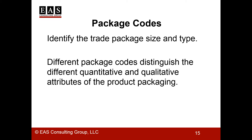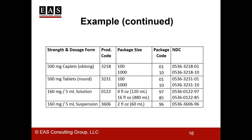Now the third segment of the NDC is the package code, which basically identifies the trade package size and type. Different package codes differentiate between the quantitative and qualitative attributes of the product packaging, like the number of pills in a bottle, the weight or volume, or the type of package such as a bottle, bag, or tube. The acetaminophen caplets and tablets came in two package sizes — 100 and 1,000 — and the package codes assigned were 01 and 10 respectively. The oral solution came in two sizes: a four fluid ounce and a 16 fluid ounce, with package codes of 97 and 85. The oral suspension only came in the two fluid ounce size, with a third unique package code.